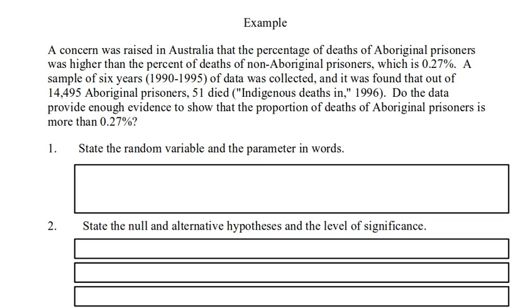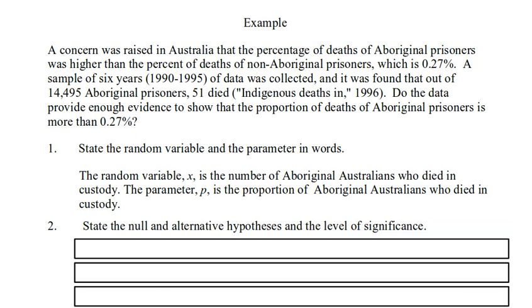State the random variable and the parameter in words. So the random variable x is the number of Aboriginal Australians who died in police custody. The parameter p is the proportion of all Aboriginal Australians in custody who died.